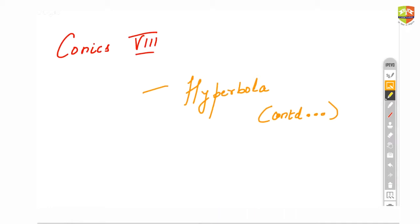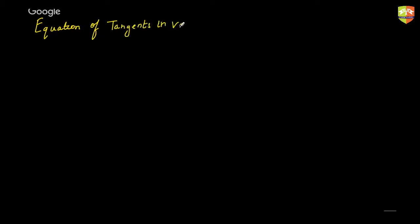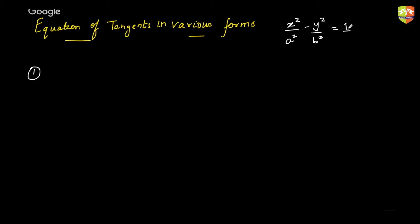I am going to resume with the concept of equation of tangents in various forms — equation of tangents to a hyperbola in various forms. I had already discussed that if we have the standard equation of a hyperbola like this and I want to draw a tangent to this hyperbola with a slope of m — that is the slope form.